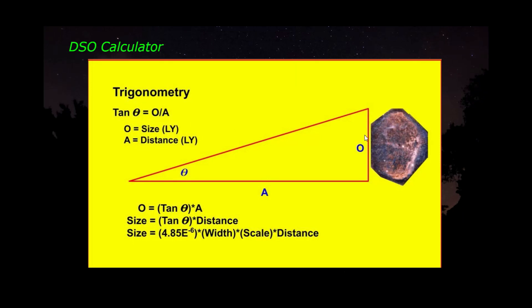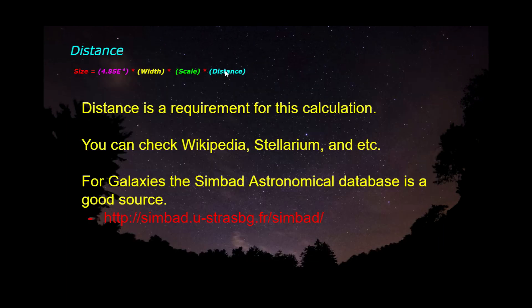So tangent is equal to opposite over adjacent. Your opposite being the size of your object, and your adjacent being the distance to that object. So you know your theta angle, and you know your distance to the object. It's real easy to calculate the size of the object. Now, that is if the angle is very large. You can just rearrange the equations to solve for the opposite, tangent theta times the adjacent distance. The problem is most of our deep sky objects are very, very small. And they're not in angles at all. They're actually in arc minutes or even arc seconds. So let's go take a look at all these values here.